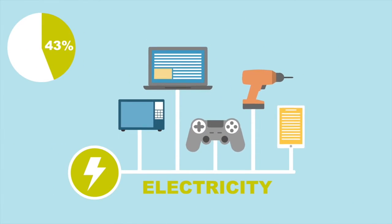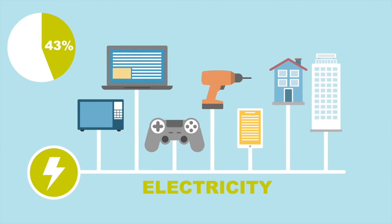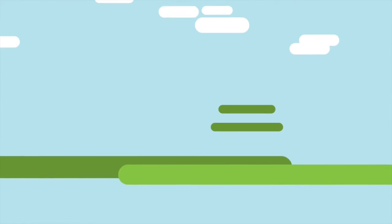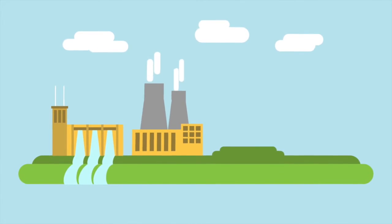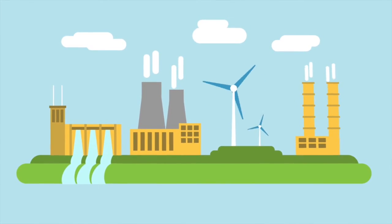43% of the energy we use is electricity for running our electronics and lighting our homes and businesses. Electricity is produced from hydroelectric dams, nuclear power plants, renewables, and coal or natural gas plants.